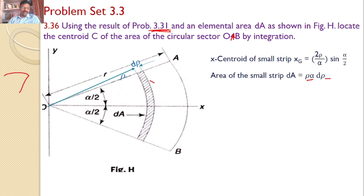As you know, the basic fundamental for a sector: if the angle is theta and the radius is r, then the arc length l = r·θ. Applying this to our small strip, the width is d-rho and the length is rho·α, giving area element rho·α·d-rho.